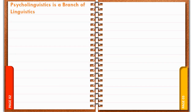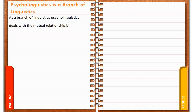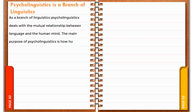Psycholinguistics is a branch of linguistics. As a branch of linguistics, psycholinguistics deals with the mutual relationship between language and the human mind. The main purpose of psycholinguistics is to understand how human psychology enables us to acquire, produce, and understand language.